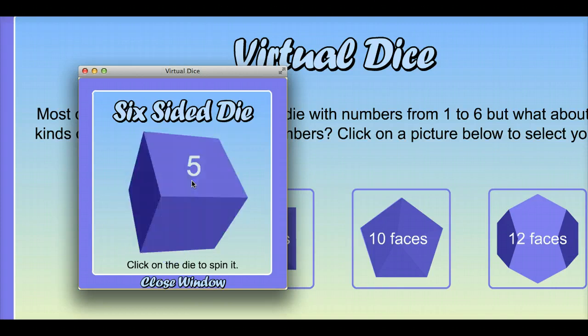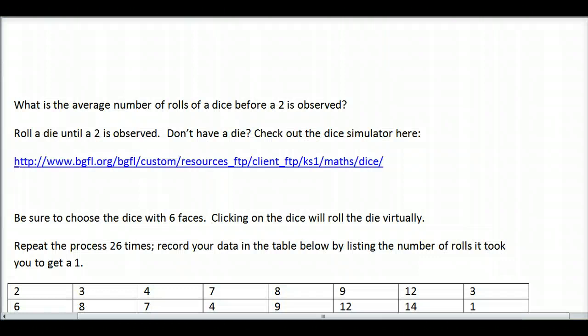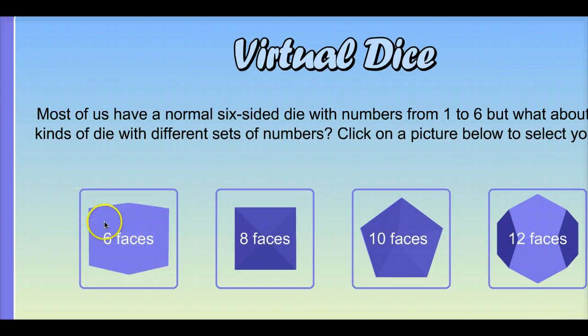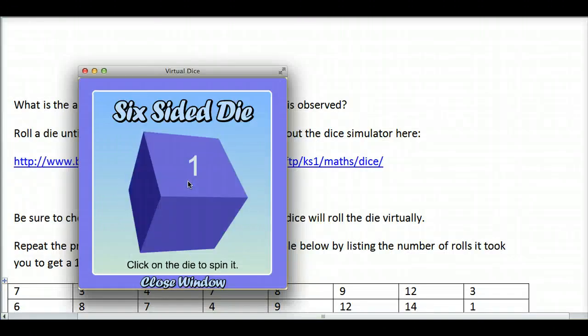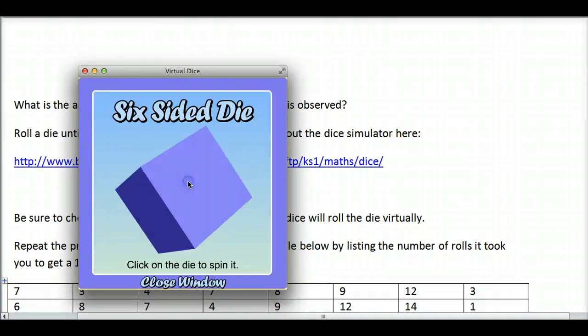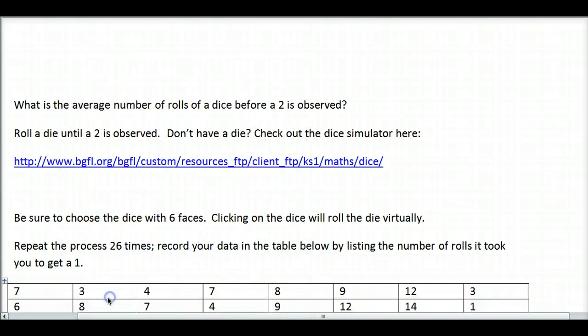Now I'm going to roll this until I see the number 2. Five rolls, six, seven rolls. Then I'll put that in my data - 7 rolls for the first time. I would do it again and again and again. One, two, three. So the next one would be 5.